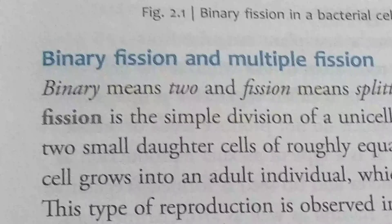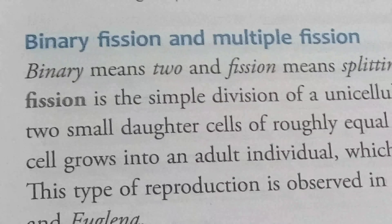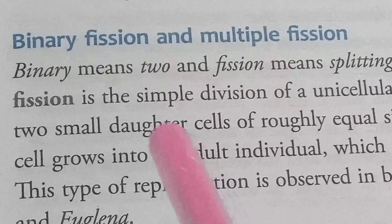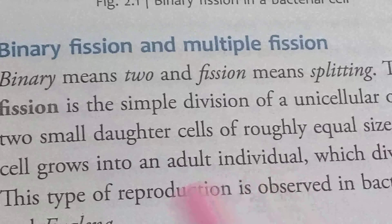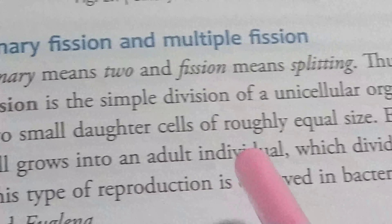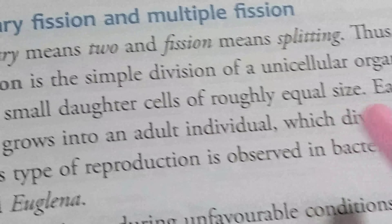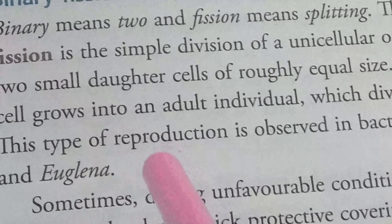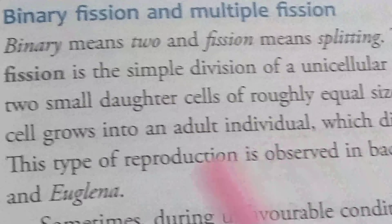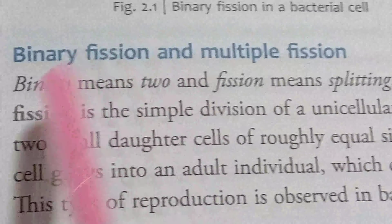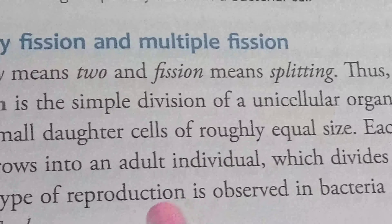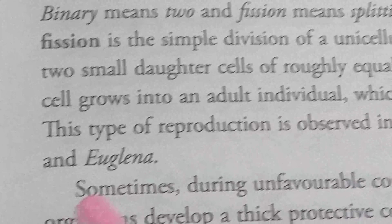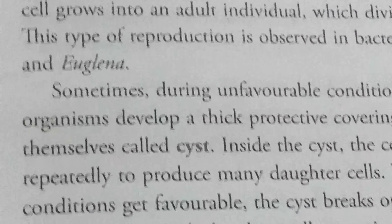In binary fission, the parent cell is unicellular and divides into two equal-size daughter cells. After growing into an adult individual, it also divides again to produce new offspring. Binary fission is observed in bacteria and Euglena.